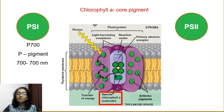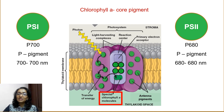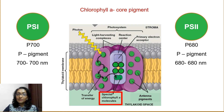On the other hand, the special pair chlorophyll A molecule in PS2 is referred to as P680. Again, P stands for pigment and 680 means 680 nanometers. This is the wavelength of light that this special pair chlorophyll A molecule absorbs most strongly. 680 nanometers is also the wavelength of red light. The special pair chlorophyll A molecules in the reaction center of PS1 and PS2 differ in their light absorption maxima because of the differences in their protein environment.